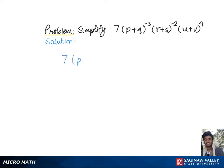To simplify 7 times p plus q to the negative 3 times r plus s to the negative 2 times u plus v to the 4th.